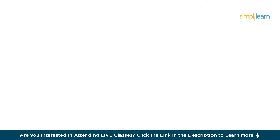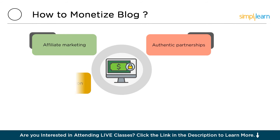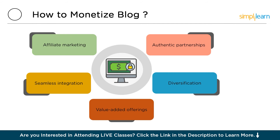Now let's talk about how to monetize the blog. Affiliate marketing stands out as a prime strategy for blog monetization, allowing bloggers to earn commissions by promoting products or services relevant to their content. By partnering with affiliate programs that resonate with a blog's niche, bloggers can maintain authenticity and foster trust among their audience. This approach not only enhances content value, but also provides a seamless way to generate income by linking to products or services naturally within blog posts, thereby driving sales through targeted referrals.